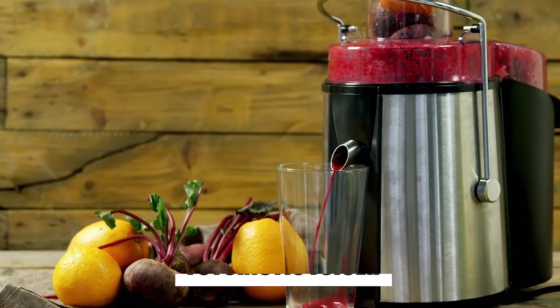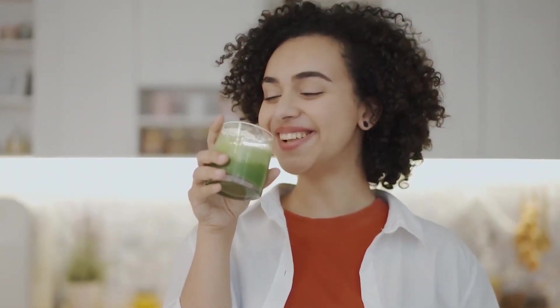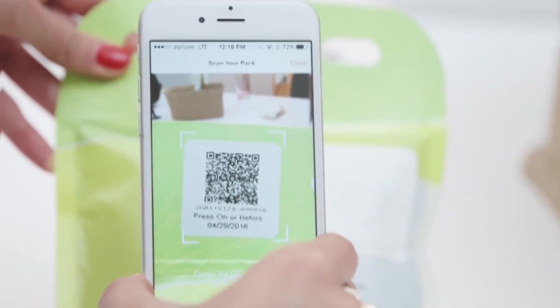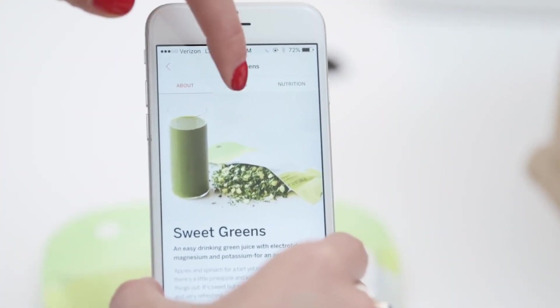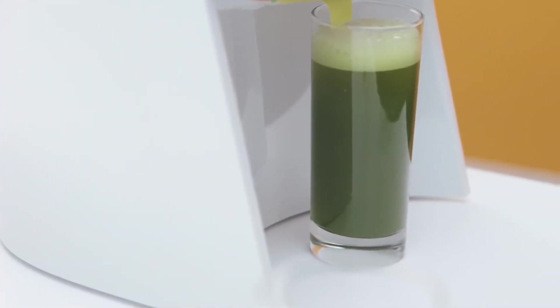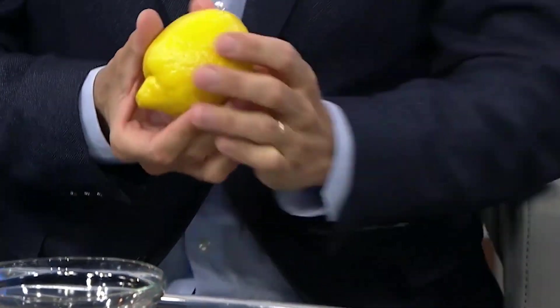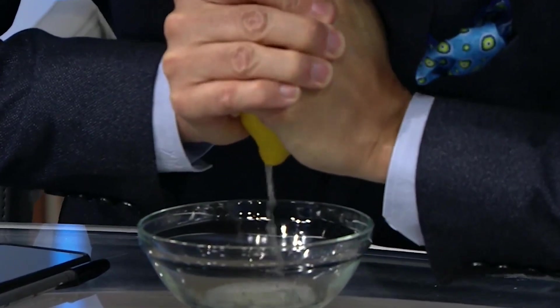Imagine having a sleek, futuristic juicer that promises to revolutionize how you make juice. Juicero has all the fancy features, like special QR codes, Wi-Fi connectivity, and even a personalized app. It seemed like the future of juicing had finally arrived, but the sad part is people quickly realized that they could get the same results by simply squeezing the juice with their own hands.